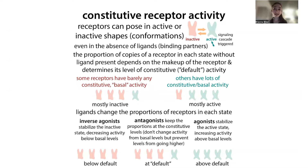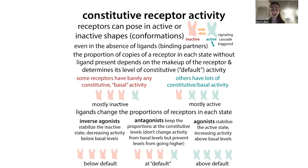When you introduce a ligand, you change the proportions of receptors in each state. The type of ligand you add will alter what proportion of the receptors are in the active versus inactive states. So you can shift those proportions by adding different types of ligands.